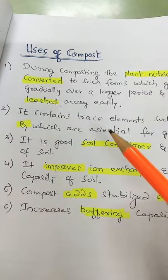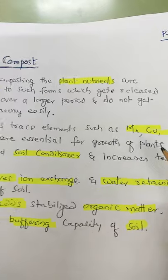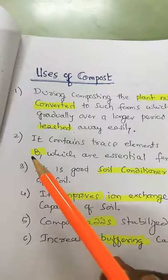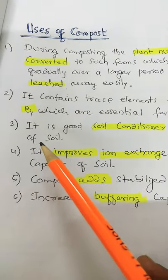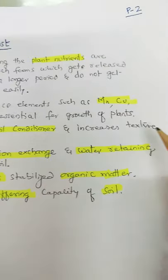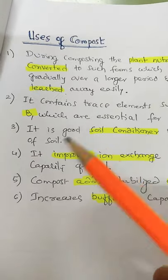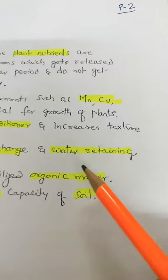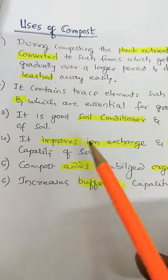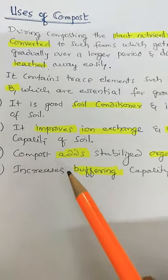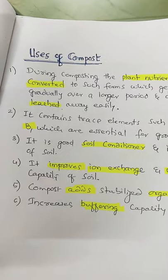Third: it is a good soil conditioner and increases texture of soil — it softens soil, it becomes lighter. Fourth: it improves ion exchange and water retaining capacity of soil. Fifth: compost adds stabilized organic matter. Sixth: it increases buffering capacity of soil. These are some of the uses of compost.